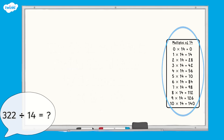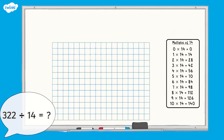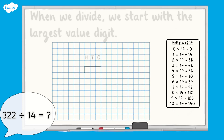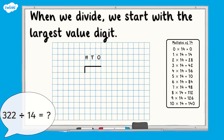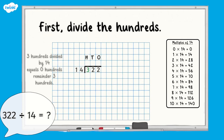Unlike with addition, subtraction and multiplication, when we start with the smallest value digit, when we divide, we start with the largest value digit. In this three-digit number, that is the hundreds digit. First, divide the hundreds. Three hundreds divided by 14 equals zero hundreds, with three hundreds still remaining.